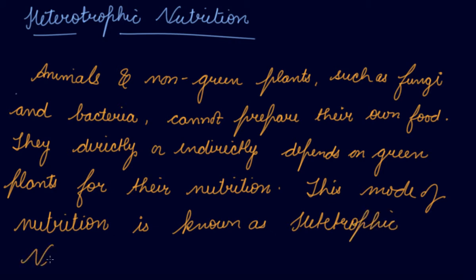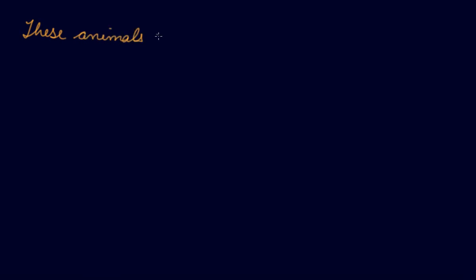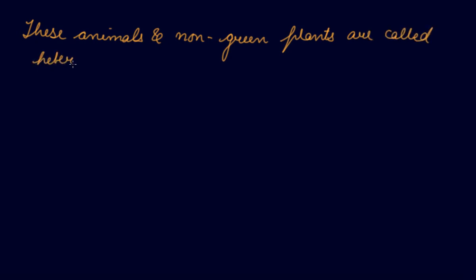This mode of nutrition is known as heterotrophic nutrition, and these animals and non-green plants are known as heterotrophs. These depend on the green plants for their mode of nutrition. When you eat meat, you are indirectly depending on food prepared by plants.